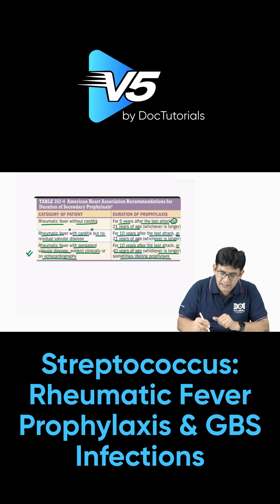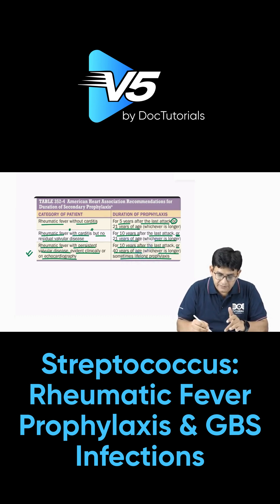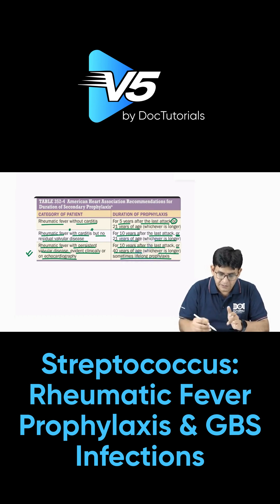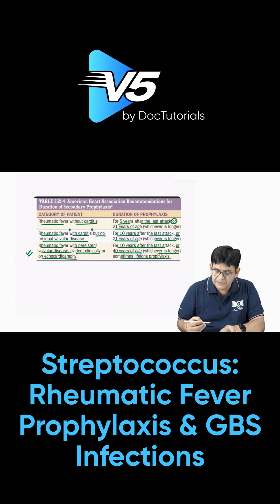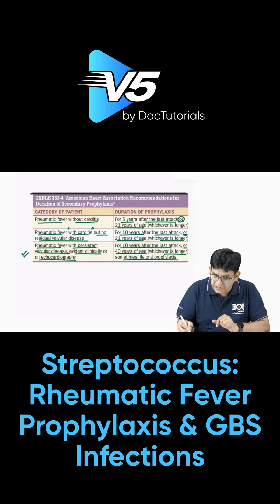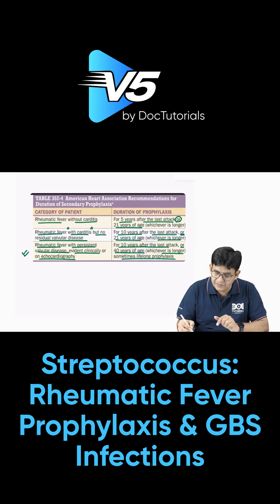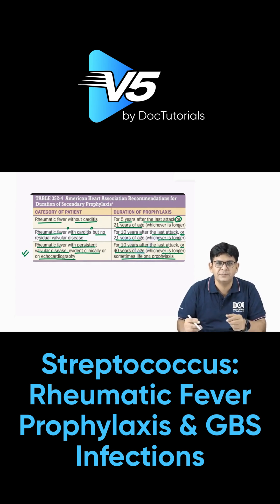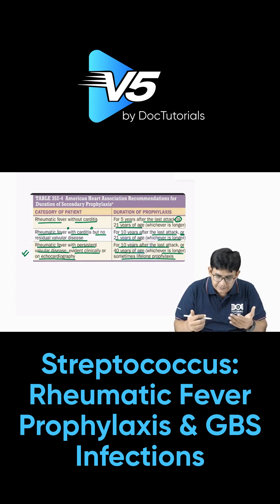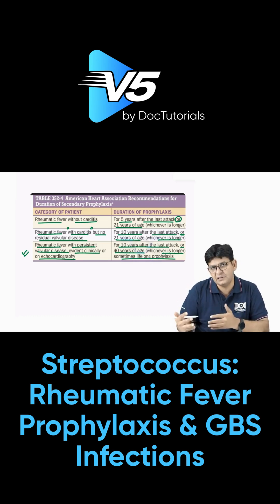To summarize: without carditis, prophylaxis is up to 5 years after the last attack or 21 years of age. With carditis, it is 10 years after the last attack or 21 years of age. With persistent valvular disease evident clinically or on echocardiography, it is 10 years after the last attack or 40 years of age, whichever is longer, and sometimes lifelong prophylaxis is needed.